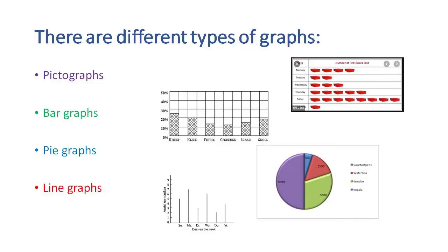We get many different types of graphs, but the four that we will focus on is a pictograph, bar graph, pie graph, and a line graph. We will do pictographs in detail, bar graphs, pie graphs, and line graphs all in detail, but there are a few little pictures here just to introduce you.